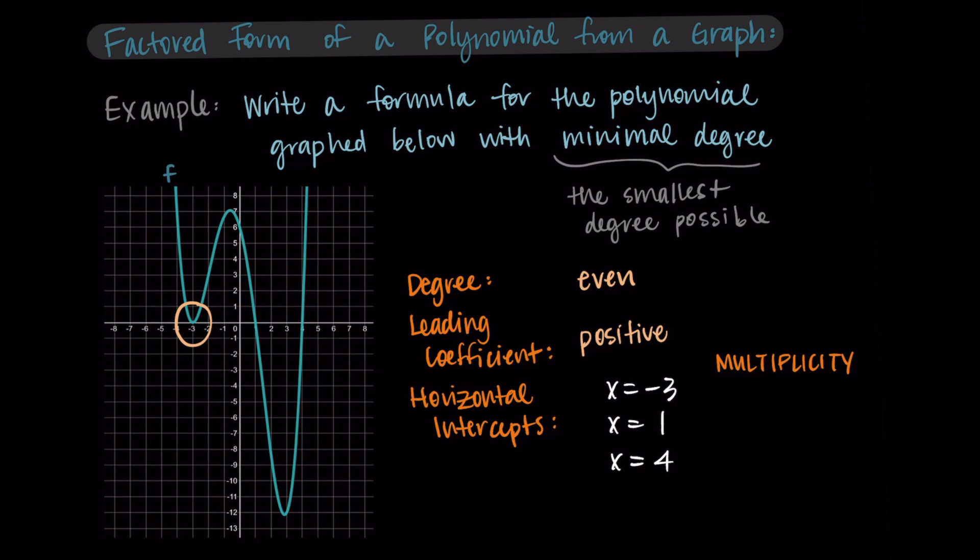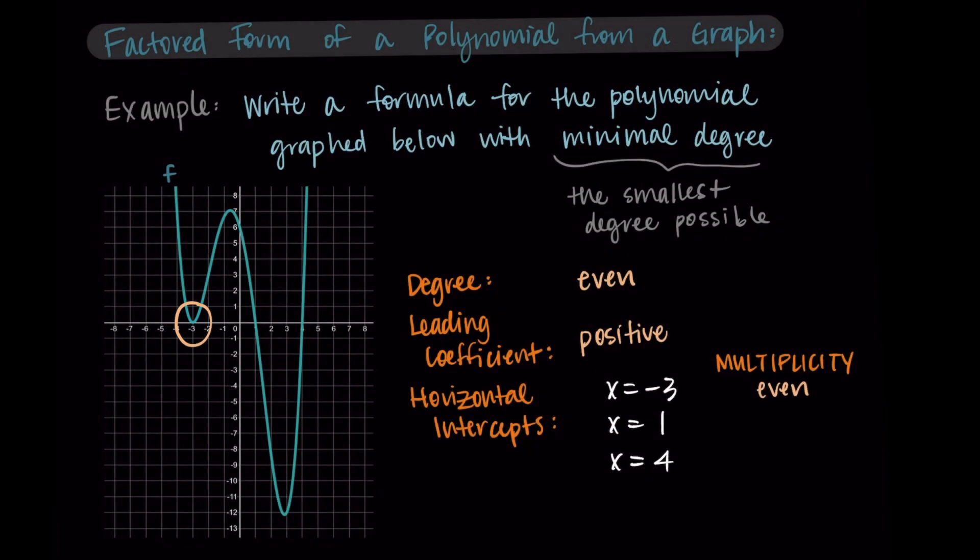The intercept x equals negative three, we see the function touches the graph and then bounces off. That means it has even multiplicity, since if we think about zooming in at that horizontal intercept, it's like a little mini parabola. It's behaving like an even polynomial. Then at x equals one and x equals four, the graph is passing through those points, so that is odd multiplicity. The graph is behaving like an odd polynomial by having one side up and one side down.